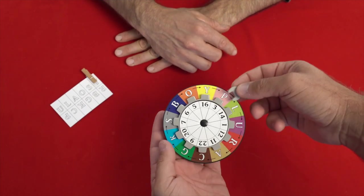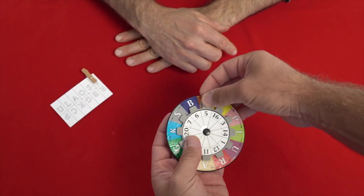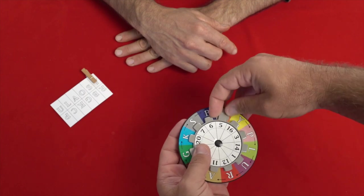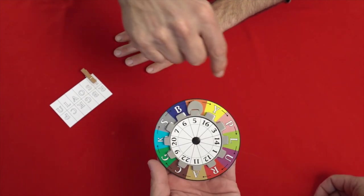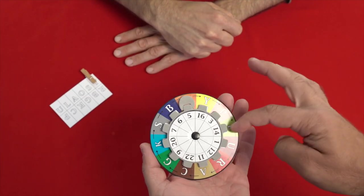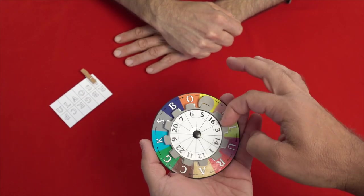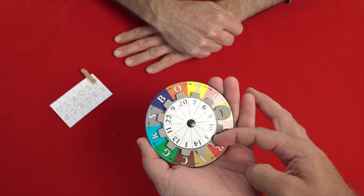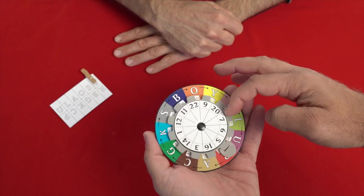Choose any number. Five. Okay, five. Now simply turn five positions on the wheel.